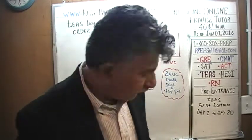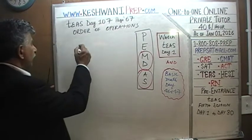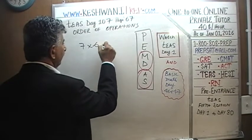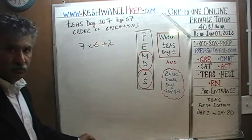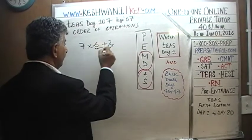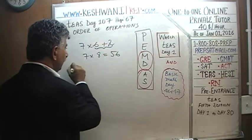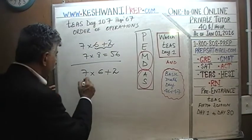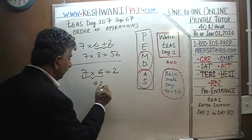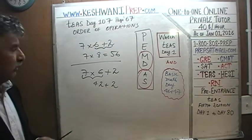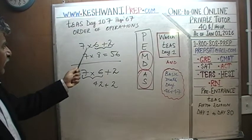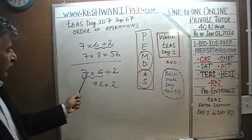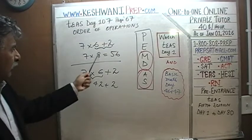For example, if you tell me seven times six plus two: if I do six plus two first, I get seven times eight, which is 56. On the other hand, someone else might do seven times six first, getting 42, then add two to get 44. Seven times six is 42, six plus two is eight, seven times eight is 56 — two different answers from the same expression.